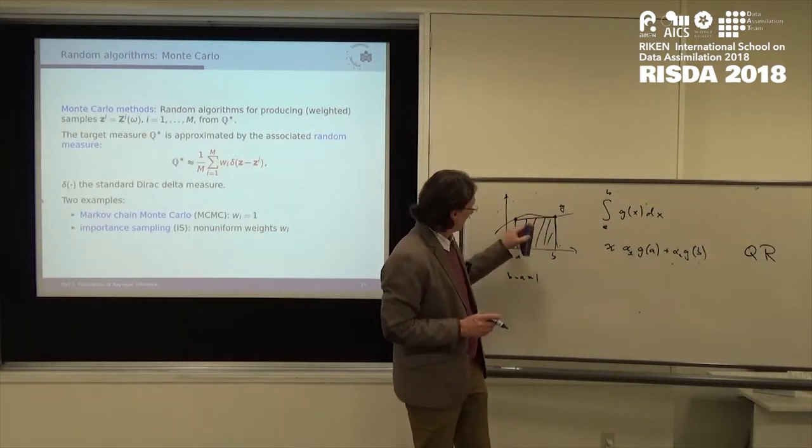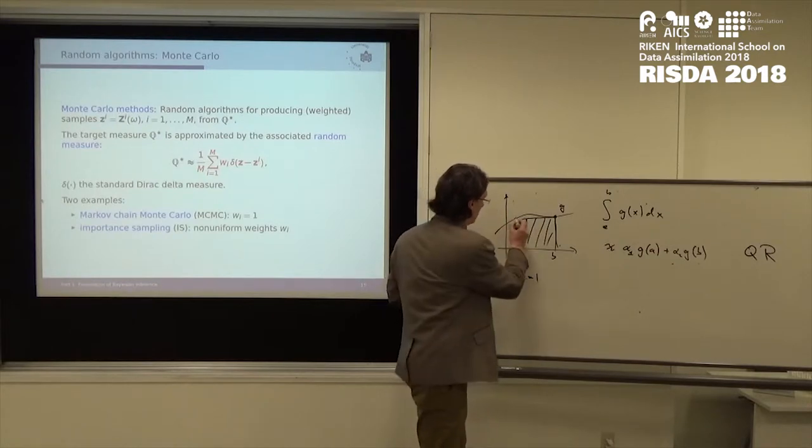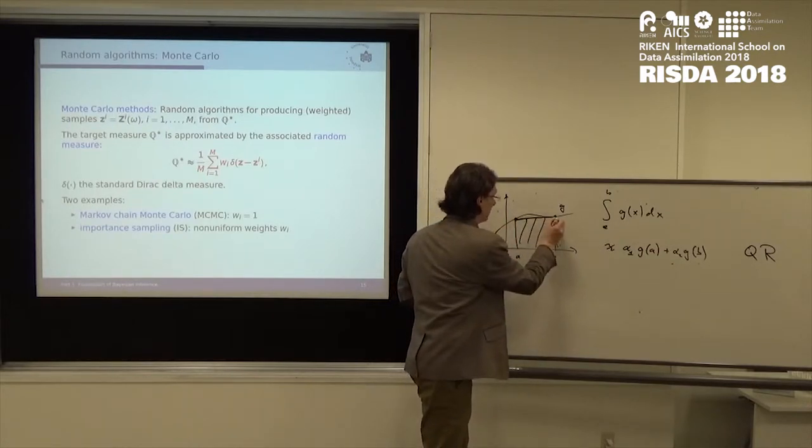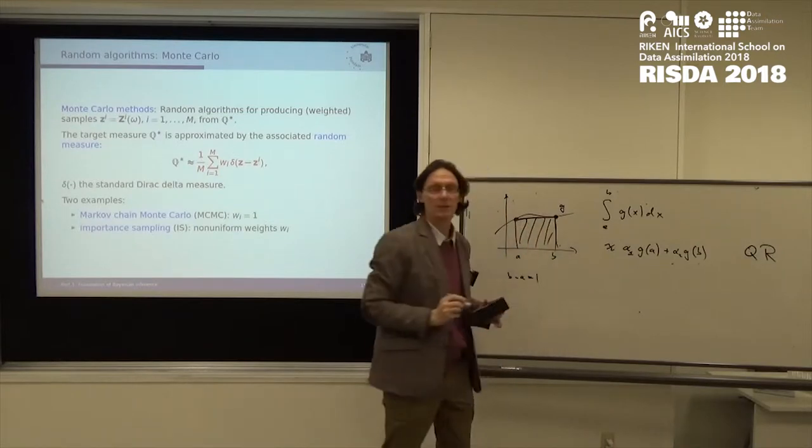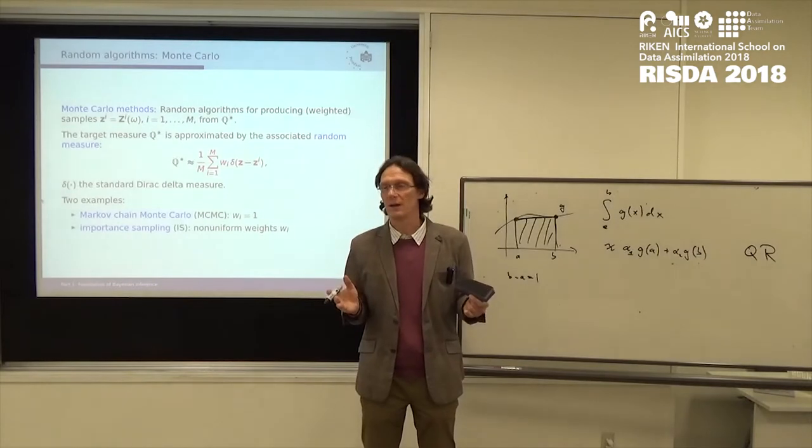You want to approximate the area, the shaded area, given by this region here. All right, so this line here connecting these two points. I have the function values at these two points at A and B at the endpoints of my interval. How is the quadrature rule called and how does it work? Trapezoidal rule, yes.